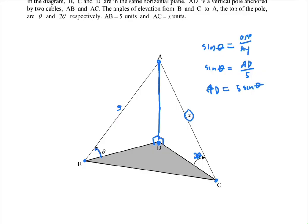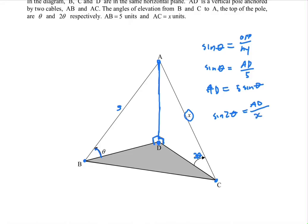Now let's find a way to use AD to find X. If we had the length of DC we would just use Pythagoras, since we have an angle of 90, but unfortunately we don't. So we use trig ratios. We can say sine of 2 theta in triangle ADC equals opposite divided by hypotenuse. The opposite is AD and the hypotenuse is X. Cross multiplying gives AD equals X multiplied by sine 2 theta.